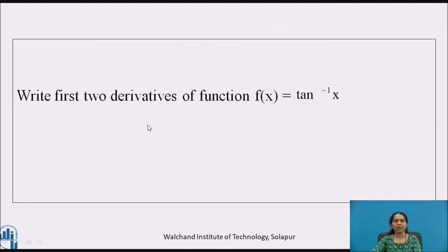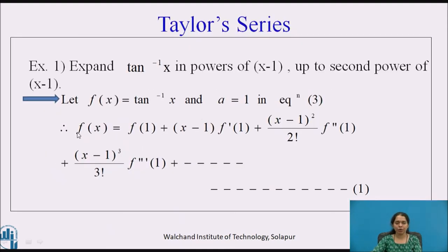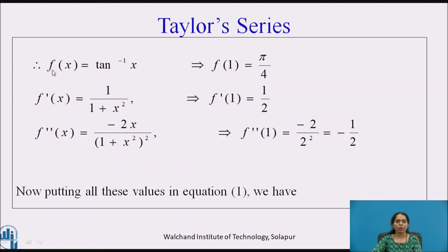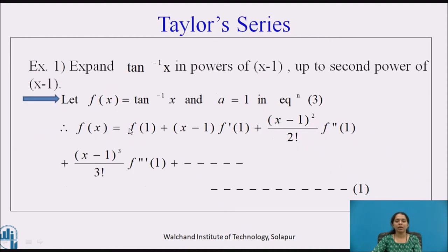Using Representation 3 of Taylor series, our expansion takes the form: f(x) = f(1) + (x−1)·f'(1) + ((x−1)²/2!)·f''(1) + ((x−1)³/3!)·f'''(1) + ... We already know that f'(x) = 1/(1+x²) and f''(x) = −2x/(1+x²)². According to this representation, we need to calculate f(1), f'(1), f''(1), and f'''(1).